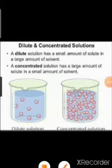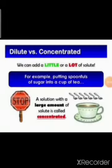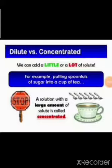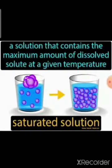How can you make a concentrated solution weaker? We can make a concentrated solution weaker by adding more water. For example, a solution with a large amount of solute is called a concentrated solution because it contains more solute. Like putting a spoonful of sugar into a cup of tea — if you keep adding more and more sugar, the solution becomes concentrated.